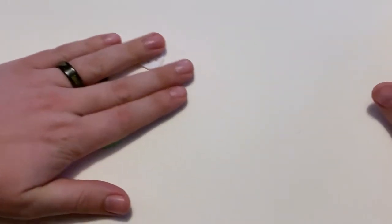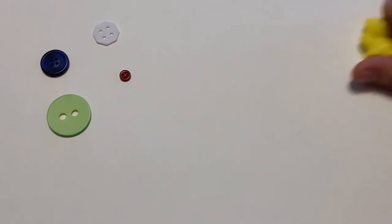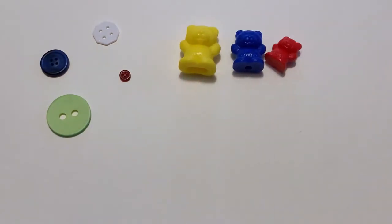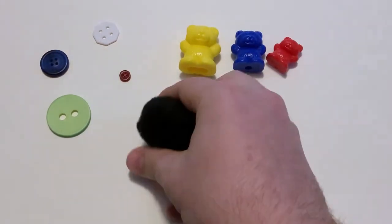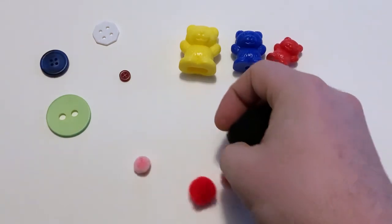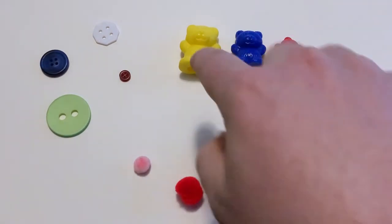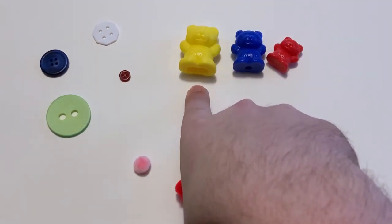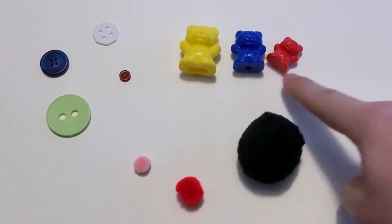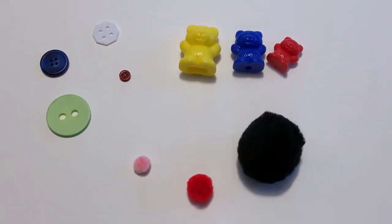You can do this just about anywhere with all kinds of different objects like bears and fuzzy pom-poms. Just ask your child to point to the biggest one and the smallest one of each type of object.